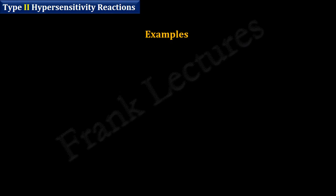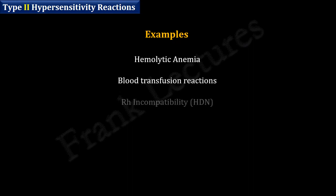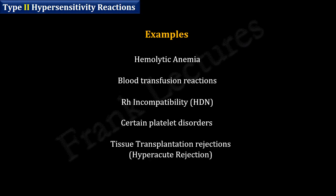Examples of type 2 hypersensitivity reactions include hemolytic anemia, blood transfusion reactions, RH incompatibility, certain platelet disorders, and some types of tissue transplantation rejection.